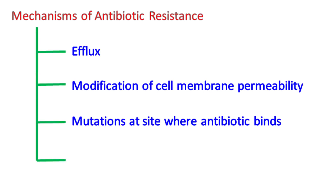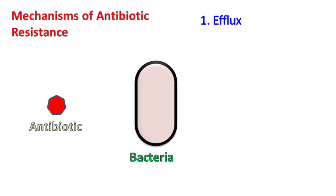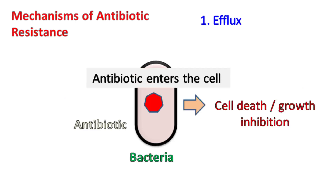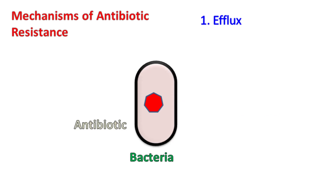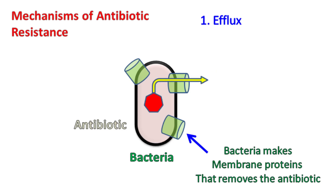In the efflux mechanism, the antibiotic usually enters the cell and results in cell death or inhibition of growth. However, the bacteria makes a membrane protein that removes the antibiotic out of the cell. As the antibiotic is removed, the bacterial cell is not affected and the cell survives.